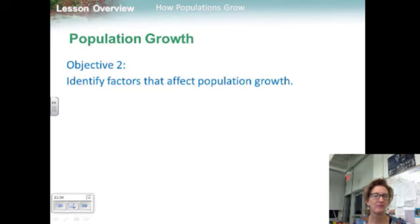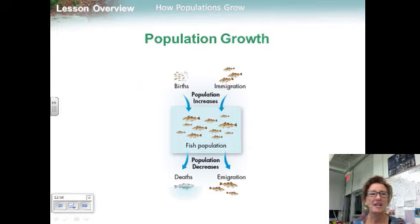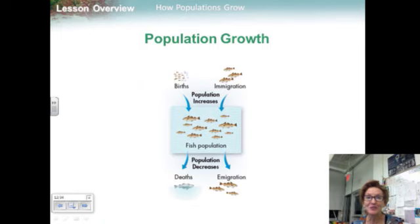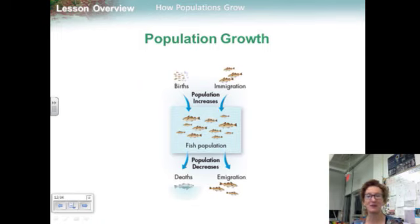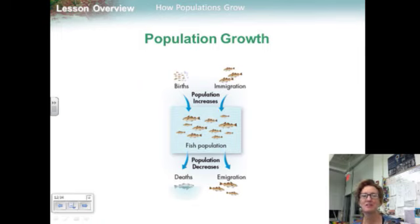Objective two: identify factors that affect population growth. A population will increase or decrease in size depending on how many individuals are added to or removed from it. The factors that can affect population size are birth rate, death rate, and the rate at which individuals enter or leave the population.